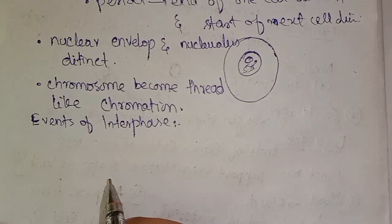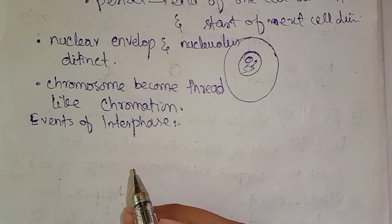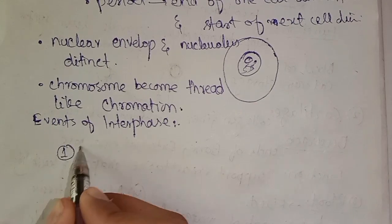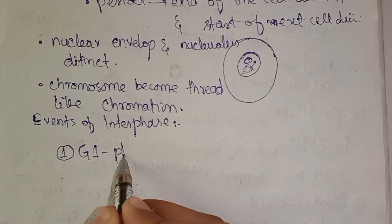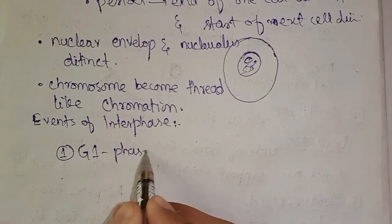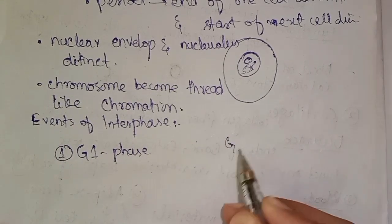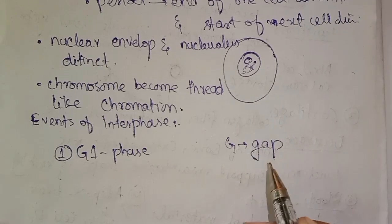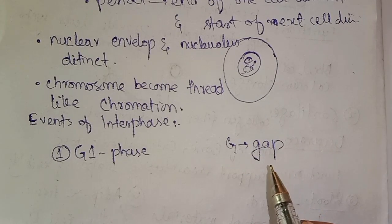G1, G2 — the G stands for 'gap'. So G1 phase is also called the first gap phase.